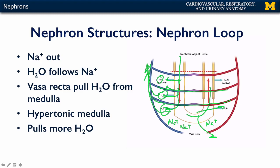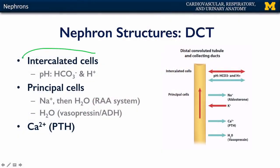Eventually the filtrate leaves the nephron loop and goes into the distal convoluted tubule. In the distal convoluted tubule there is a further refinement of both tubular secretion and reabsorption. There are two populations of cells significant for this process. The first are intercalated cells, which are of supreme importance for maintaining pH homeostasis, because they determine if bicarbonate ions and protons either stay in the filtrate, are reabsorbed, or are secreted. Depending on conditions in the blood, intercalated cells can finely adjust pH.